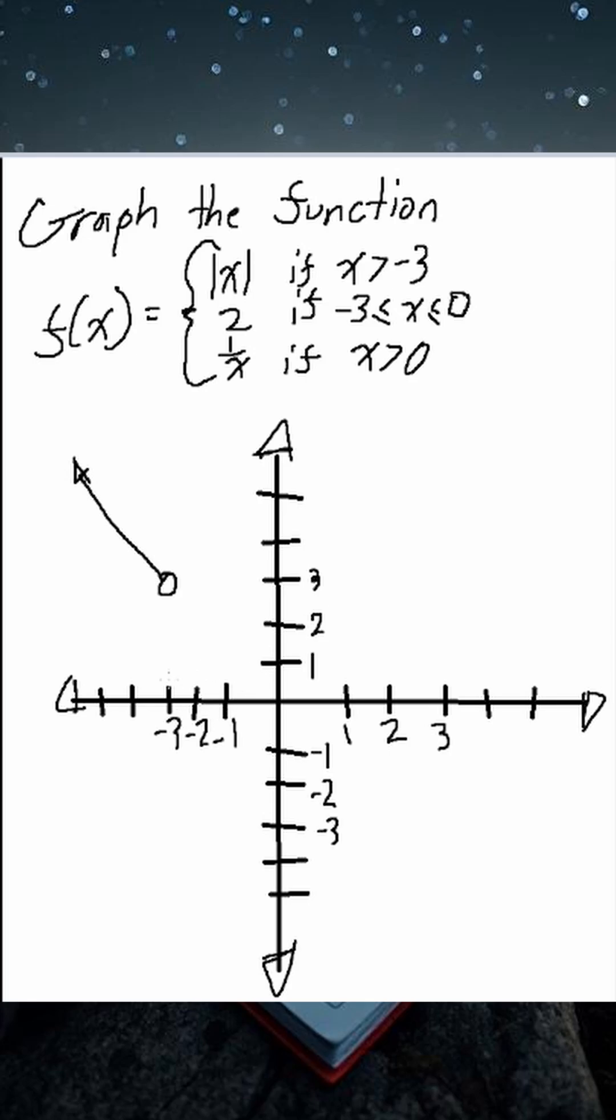From negative 3 to 0, we have just the linear function of 2, but it's greater than or equal to negative 3, so we'll have a closed circle here and a closed circle at 0, and we'll just connect that with a straight line.